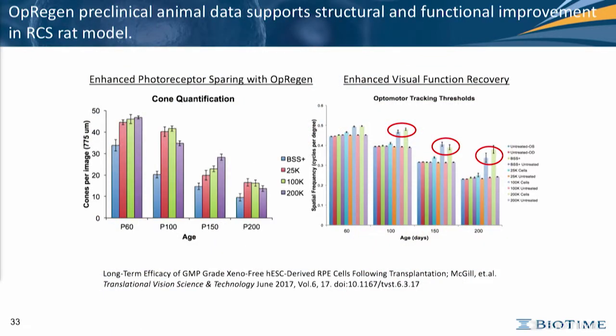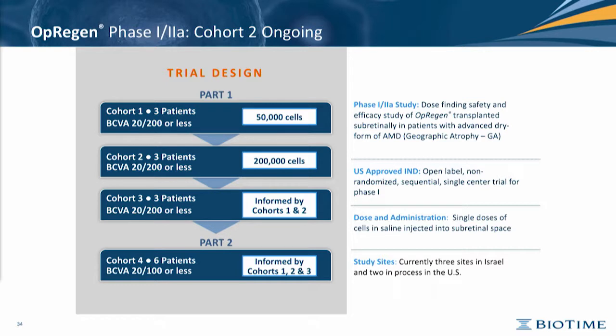Here we have some animal testing results. On the left, the bars correspond to three different concentrations of cells, and we can see that the recovery of cones becomes significant throughout time in the life of these mice. On the right we have a visual function test in these animals, where the three circles on the right correspond to the medium and high concentration of cells, which produces survival of vision over a longer time.